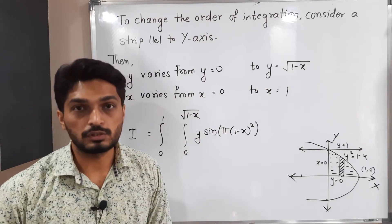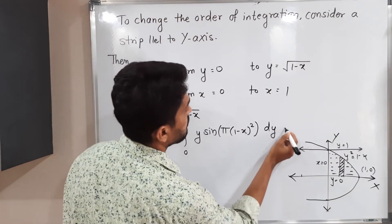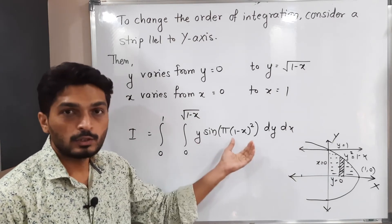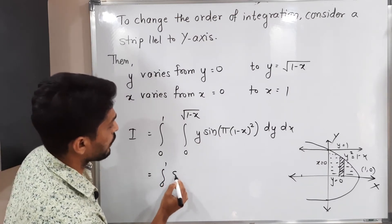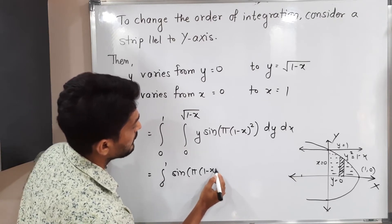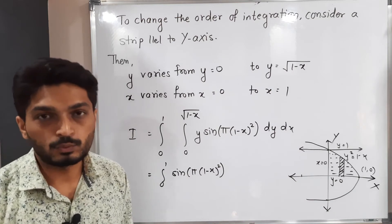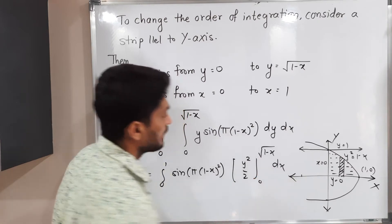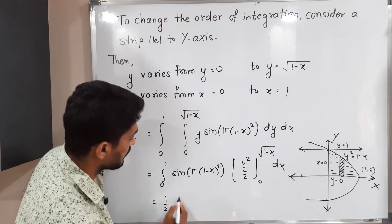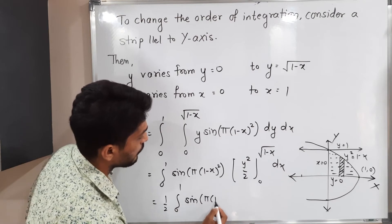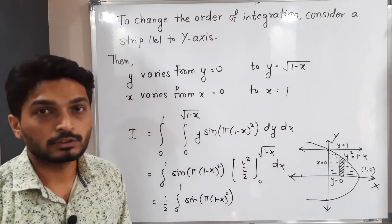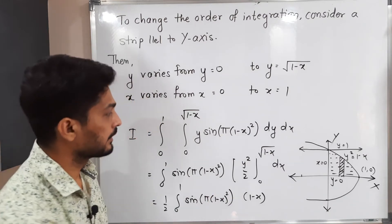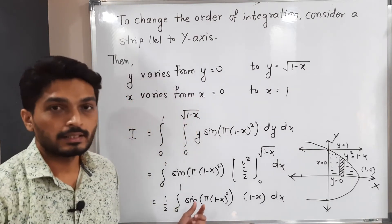We have now changed the order: previously inner was with respect to X and outer with respect to Y; now it is inner with respect to Y and outer with respect to X. When integrating with respect to Y, the term sin(π(1−X)²) is constant, so it is taken outside the inner integral. The inner integral of Y with respect to Y gives Y²/2, evaluated from 0 to √(1−X). The 1/2 comes outside, giving: (1/2) ∫₀¹ sin(π(1−X)²) · (1−X) dX.